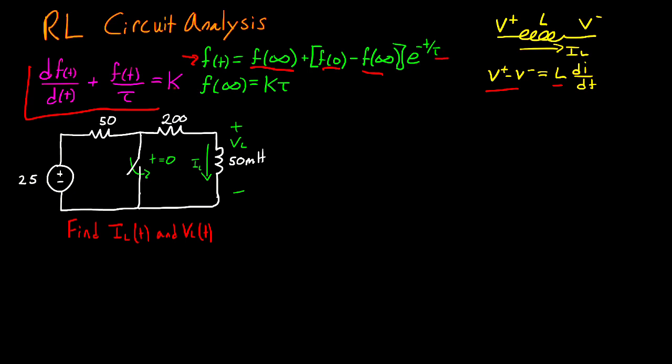So tau we can get directly from the denominator right here, and f of infinity we can actually get by the product of tau and k. Multiplying the two gives us f of infinity. So the only thing we don't have here is our initial condition, f of 0. And the first part of solving an RL circuit is to find that initial condition.